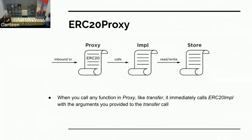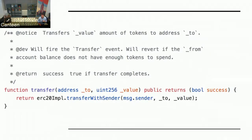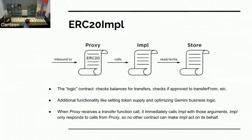When you call any function in proxy, it immediately calls impl with the arguments you provided. Transfer in proxy has no logic — that's the prototype you're used to: transfer to a destination address, this value. Behind the scenes, proxy just says, impl, this is what this person wanted to do, please take care of it and return true or false. Impl is the logical contract — impl checks that balances are sufficient, for example in a transfer call. This is where business logic lives. Impl only will respect calls from proxy and will not respond to any other contract in the world.